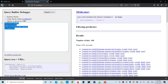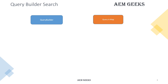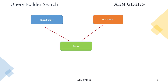Now I will implement the same search in the backend module in an OSGI service using the Query Builder API. To implement search in a backend module, first you need a Query Builder and a query in a Map. Basically, whatever the query is, you save it in key-value pairs in the Map. Once you have the Map, you'll get a Query object using these two. And from this Query you'll get all the search results.